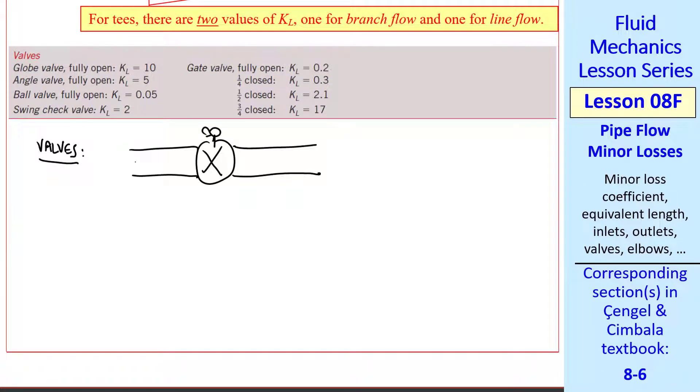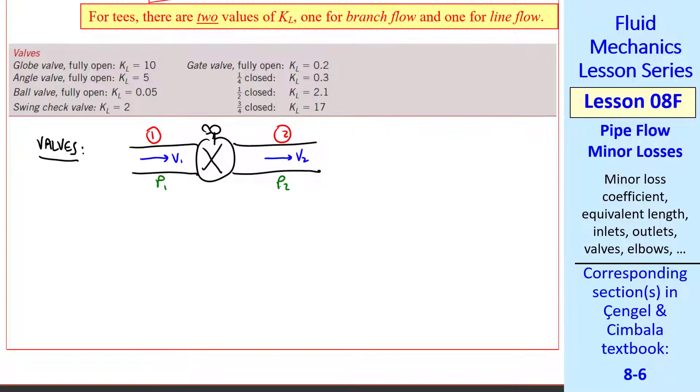I want to talk briefly about valves because I find that students are often confused. When you have flow through a valve, V1 is equal to V2, but P2 is less than P1. So the pressure drops.